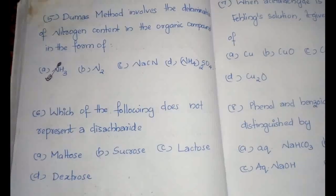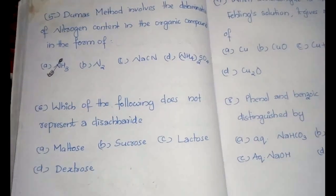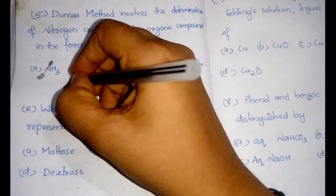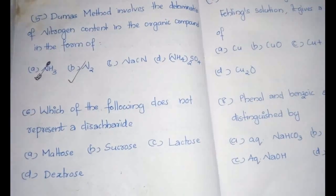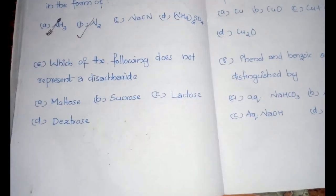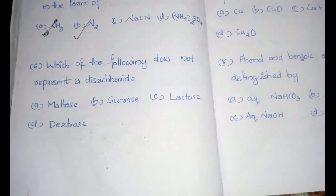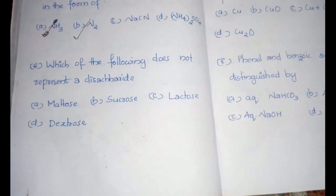The next question is: the Dumas method involves the determination of nitrogen content in the organic compound in the form of N2. It will measure as free nitrogen. Then next question is: which of the following does not represent a disaccharide? A disaccharide means two monosaccharides are combined by a glycosidic linkage.